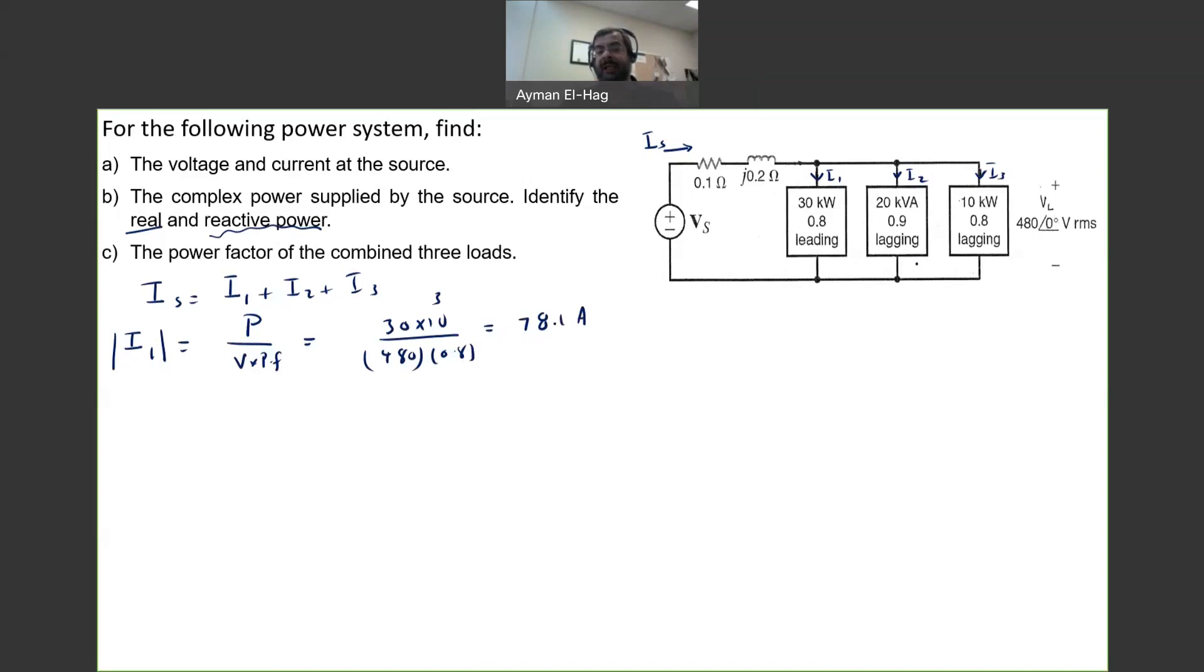Now, the voltage angle is 0. So theta Z, or theta V minus theta I, is equal to cosine inverse of the 0.8. And this is equal to 36.9. This is actually theta V minus theta I. Now, I is leading. Because this is leading, so I has to be higher than theta V. So if theta V is 0, theta I will equal to plus 36.9. If it is lagging, then it will be minus 36.9 because it will lag the voltage. So from this, your I1 is equal to 78.1 angle of plus 36.9. And this is amperes. This is your I1.